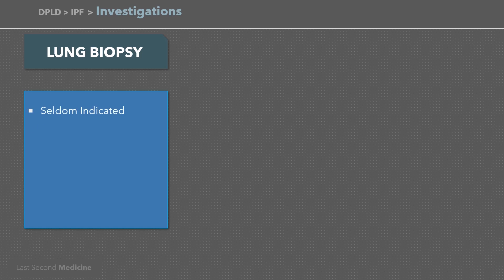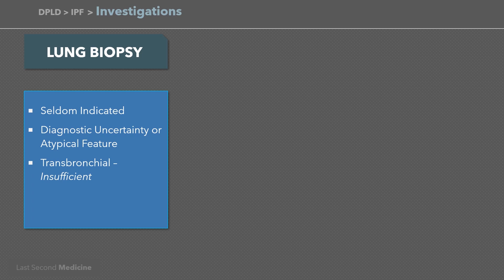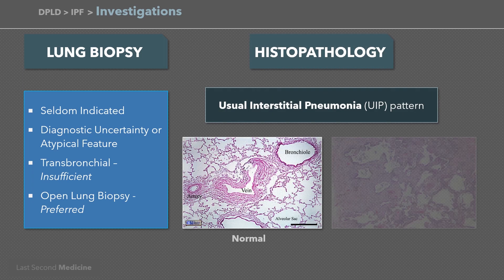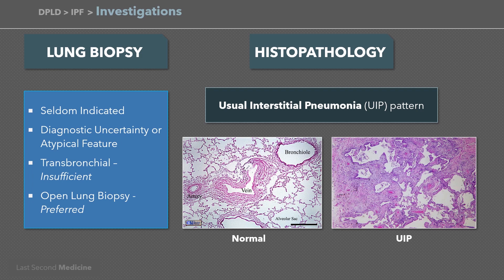Lung biopsy is usually not necessary but can be considered in cases of diagnostic uncertainty or disease with atypical features. Tissue samples from transbronchial lung biopsy are invariably insufficient, and if tissue is required, a surgical lung biopsy should be sought. Usual interstitial pneumonia is the histological pattern predominantly encountered in IPF; however, this pattern can also be found in asbestosis, hypersensitivity pneumonitis, connective tissue diseases, and drug reactions, which can be differentiated from IPF on the basis of history and examination.